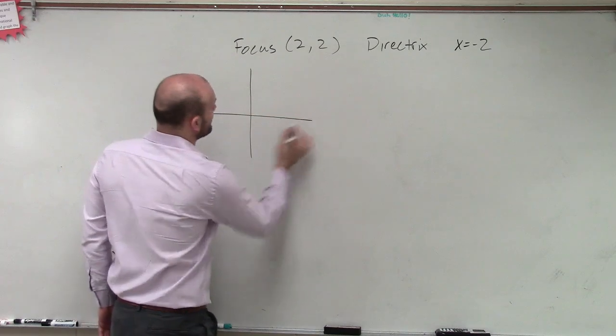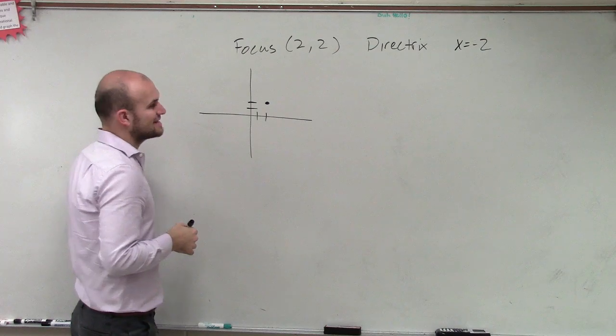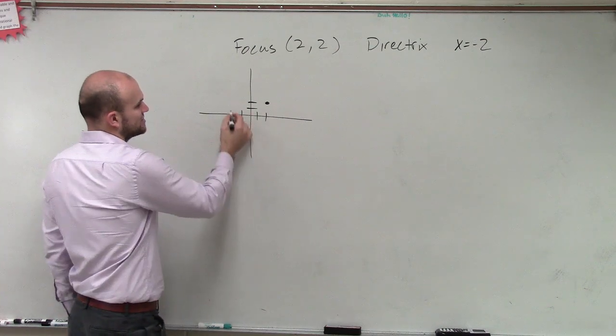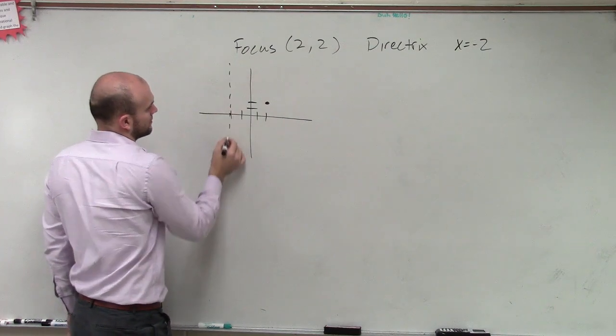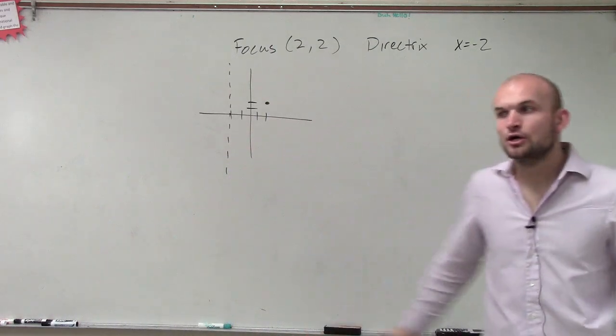So if I was going to plot this, if I have a focus at (2,2), and then my directrix is x equals negative 2, which is a vertical line. So what can my parabola look like?